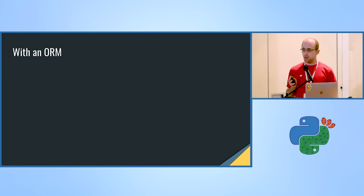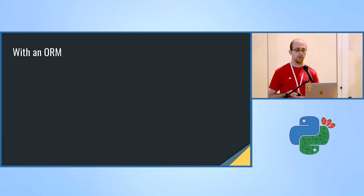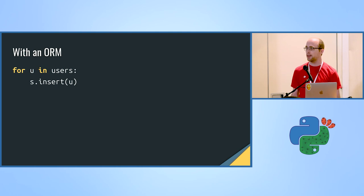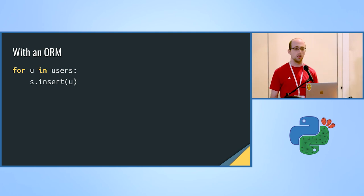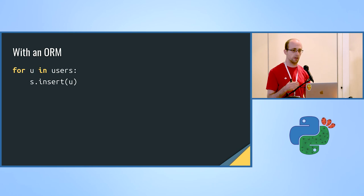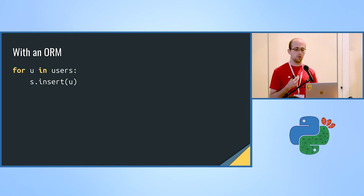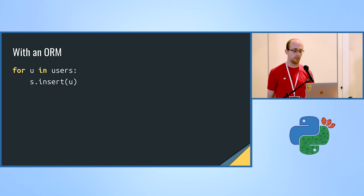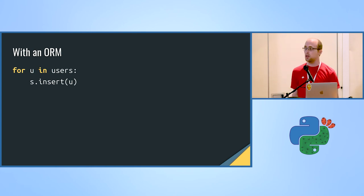With an ORM, this is usually much more trivial and looks essentially like a simple insert call. There is some library behind the scene that takes care of generating the query based on the fields of your object, and essentially just maps that into read and write queries from the DB.